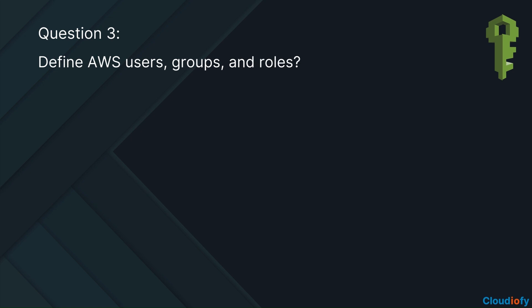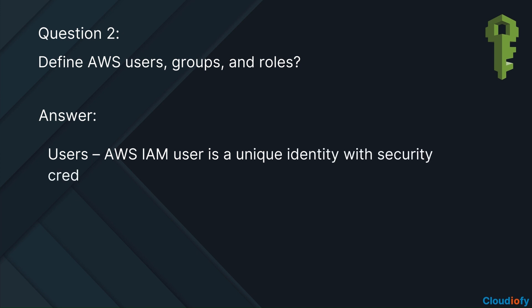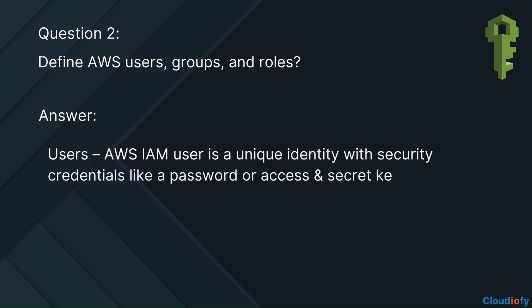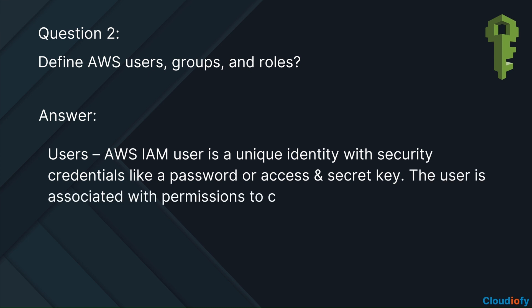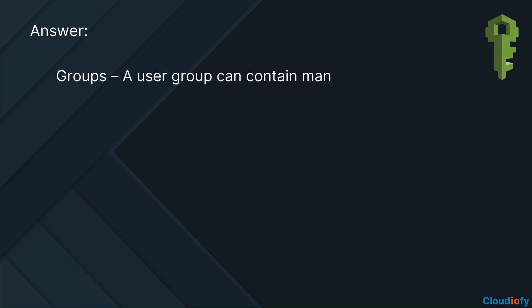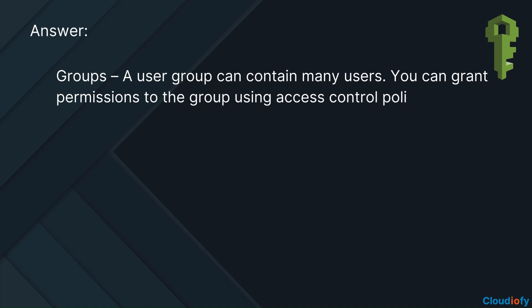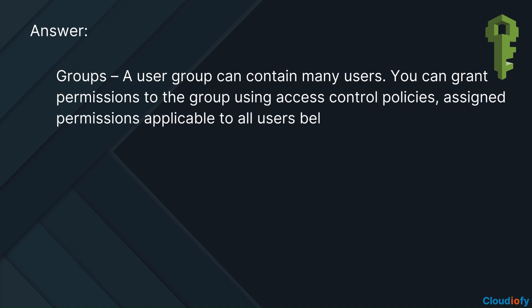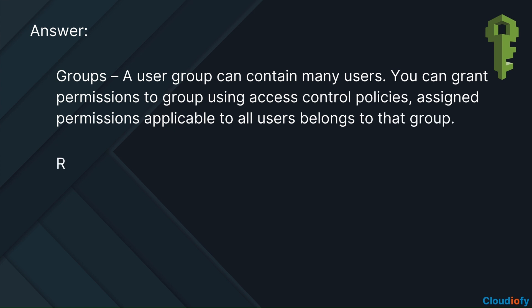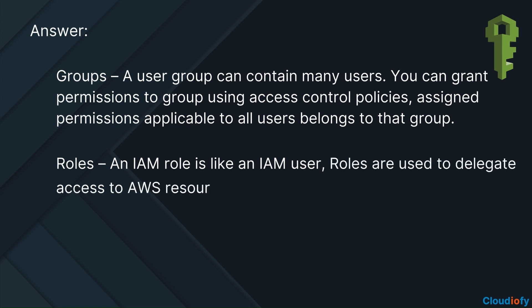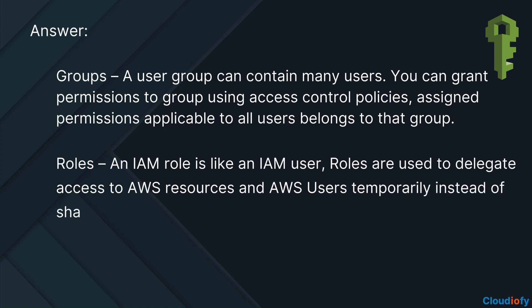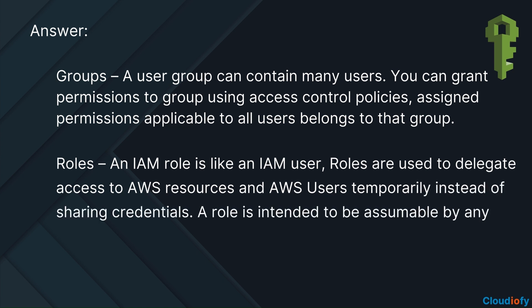Define AWS users, groups, and roles. Users: an AWS IAM user is a unique identity with security credentials like a password or access and secret key, associated with permissions to control the use of AWS resources. Groups: a user group can contain many users, and you can grant permissions to the group using access control policies applicable to all users in that group. Roles: an IAM role is like an IAM user but is used to delegate access to AWS resources temporarily instead of sharing credentials. A role is intended to be assumable by anyone who needs it.